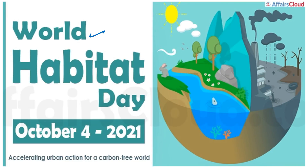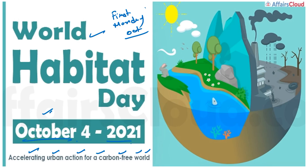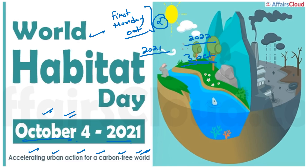World Habitat Day is observed on 4th October 2021, with the theme 'Accelerating Urban Action for a Carbon-Free World'. This day is not always on 4th October — it is observed on the first Monday of October every year, so in 2022 it will be on 3rd October. The day highlights the condition of towns and cities and the basic right to adequate shelter.